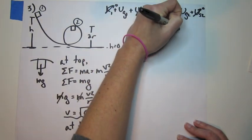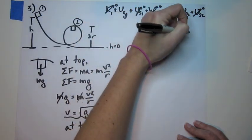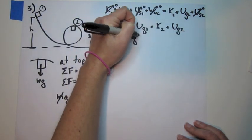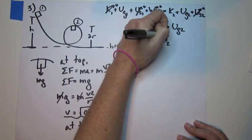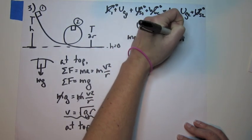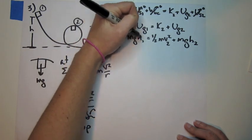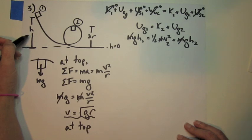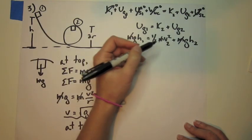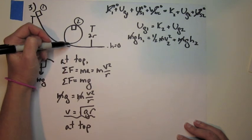So this becomes—I'm just going to replace these—this is mgh1 equals one-half mv2² plus mgh2. So the m's all go away. h1 is what we're looking for, so I can just replace it with h. v2 is the velocity at the top, which we discovered is square root of gr. And h2 is twice the radius of the circle, so that's 2r.